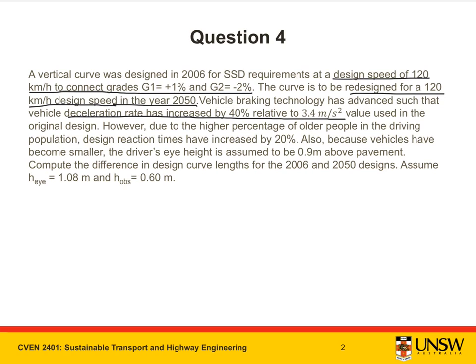However, due to the higher percentage of older people in the driving population, design reaction times have increased by 20%. Also, because vehicles have become smaller, the driver's eye height is assumed to be 0.9 m above the pavement. Compute the difference in design curve lengths for the 2006 and 2050 designs. Assume H_I is equal to 1.08 m and H_obs is equal to 0.6 m.